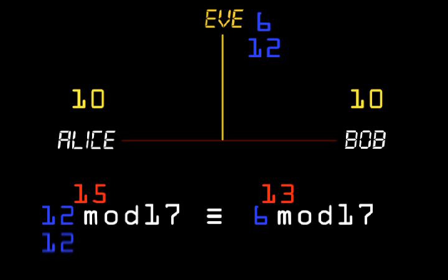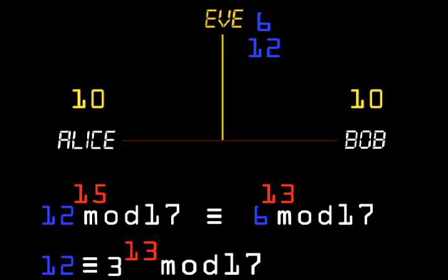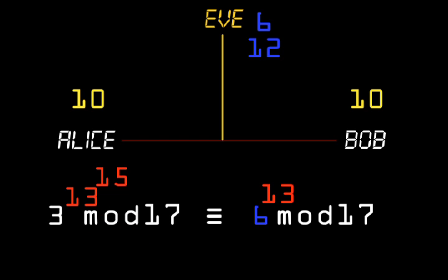First look at Alice. The 12 she received from Bob was calculated as 3 to the power of 13 mod 17. So her calculation was the same as 3 to the power of 13 to the power of 15 mod 17. Now look at Bob. The 6 he received from Alice was calculated as 3 to the power of 15 mod 17. So his calculation was the same as 3 to the power of 15 to the power of 13 mod 17. Notice they did the same calculation with the exponents in a different order.